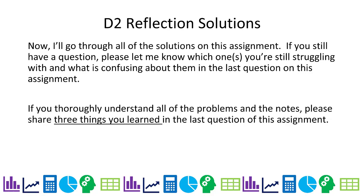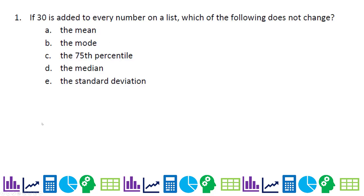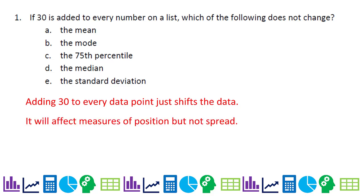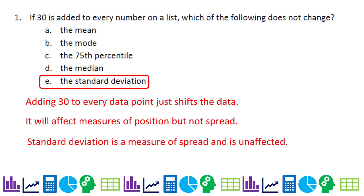Welcome to the D2 reflection solution. Let's get started on the first problem: if 30 is added to every number in a list, which of the following does not change? Adding 30 to every data point just shifts the data. All measures of position will be affected, but not spread. The only measure of spread is standard deviation, which is unaffected. Picture taking all the data and shifting it together — that does not increase the spread.